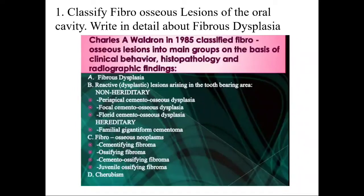According to Charles A. Warden in 1985, he gave the classification for fibro-osseous lesions based on clinical presentation, histopathology, as well as radiographic findings. It is divided into fibrous dysplasia and the dysplastic lesions arising on the tooth-bearing areas — non-hereditary and hereditary ones. Then the fibro-osseous neoplasms such as cementifying fibroma, ossifying fibroma, cemento-ossifying fibroma, juvenile ossifying fibroma, and cherubism.